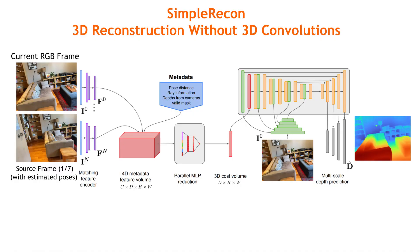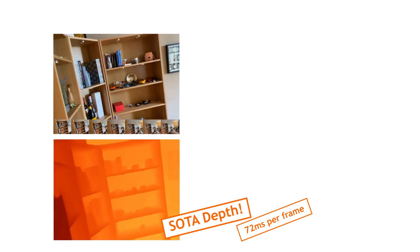We present Simple Recon, a method for accurate monocular depth prediction from video, utilizing a strong image encoder and our novel metadata for improved cost-volume matching. Crucially we use no 3D convolutions and instead opt to use simple tricks for reducing our cost volume and achieving sharp depths, exceeding the state-of-the-art in depth estimation.